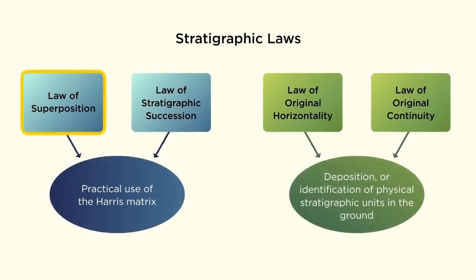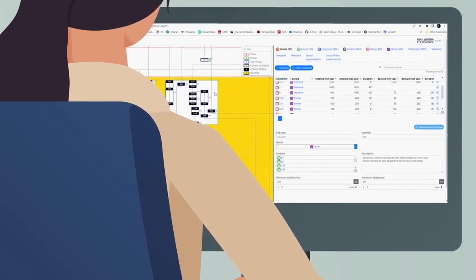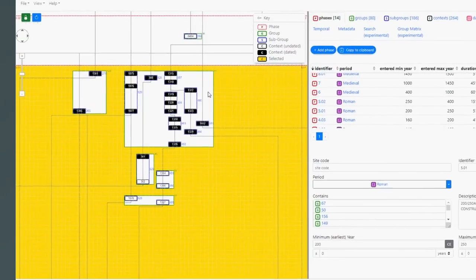Of these, the law of superposition and the law of stratigraphic succession are most relevant to how we use the Harris matrix in practice. The fundamental principle of superposition provides both a spatial and temporal sequence to the stratigraphic units recorded.